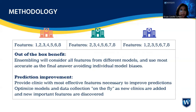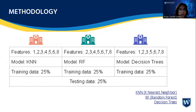This is the out-of-the-box benefit of this AI modeling — as we use the most accurate result as the final answer, we try to avoid individual model biases. The prediction improvement of this AI modeling is that we provide the clinics with the most effective features necessary to improve predictions. We optimize models and data collection on the fly as new clinics are added and new important features are discovered. Clinic A uses the KNN (K-Nearest Neighbor) AI model, Clinic B uses the Random Forest AI model, and Clinic C uses the Decision Tree AI model.